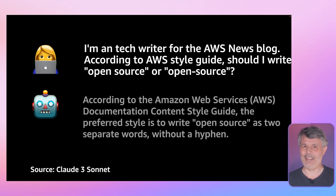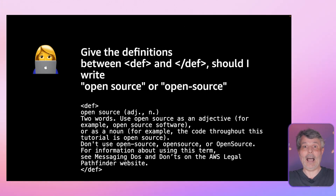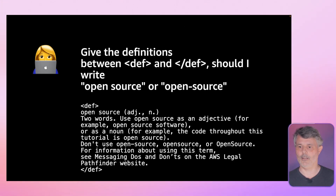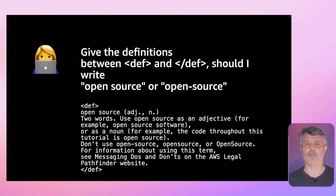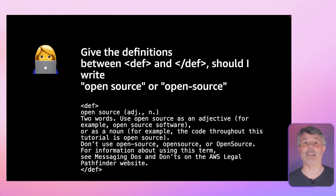I can extend that idea and provide even more context in my question. Imagine that I have the full content style guide and I copy-paste it into my question. I ask the question and provide the full document: 'Given the definitions between that tag and that tag, should I write open source with or without a hyphen?' — and paste everything. This is what we call in-context learning. It's not really learning because the model doesn't learn anything new; we are just injecting more context, giving the answer as part of the question, and letting the model do what it does best: summarize and classify.